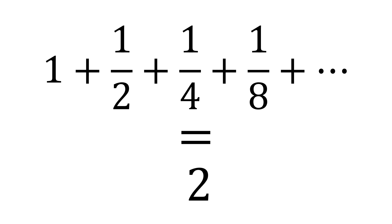So there we have it. The sum of the series one plus a half plus a quarter plus an eighth and so on and so on is equal to two.